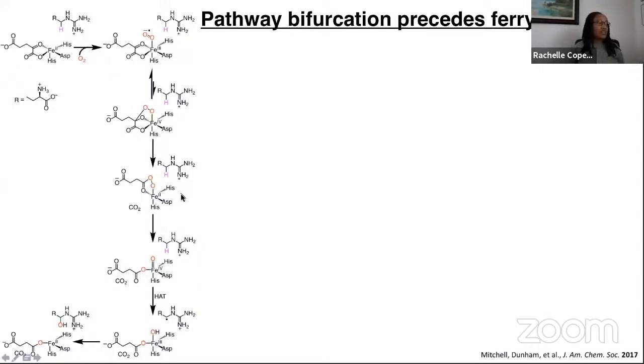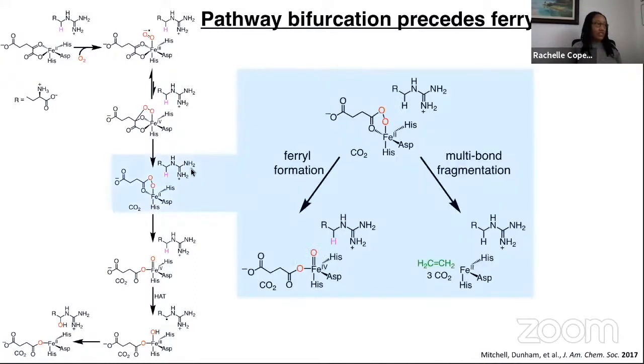Of the other intermediates that I've described earlier, one that has been experimentally observed is this iron-2-peroxysuccinate state. The Bohl lab was able to observe this in crystals of another iron-2-OG enzyme. Shifting focus to this intermediate, we hypothesize that what could be happening is that instead of undergoing O-O cleavage to form a ferryl and thereby enabling arginine oxidation, this peroxysuccinate intermediate could undergo a multibond fragmentation which gives rise to ethylene and the CO2 products.